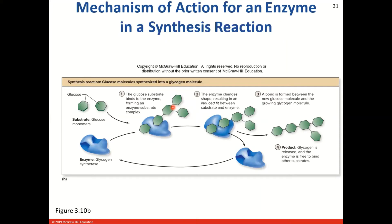Now we have the mechanism of an enzyme in a synthesis reaction. Here we have glucose monomers where our end product is going to be glycogen — a storage vessel for glucose molecules. We take glucose, we have two binding sites for them, the glucose binds, forming our enzyme-substrate complex. We now form the bond — this is essentially a dehydration reaction where we're pulling water out. We're left with the product glycogen, and again that enzyme reverts back to its original conformation.